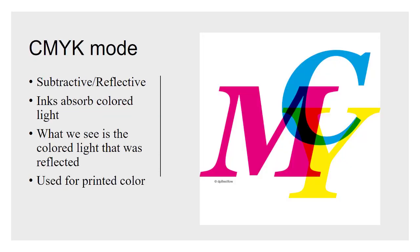CMYK stands for cyan, magenta, yellow, and K stands for black. That's a system used for print. It has to do with how light is reflected off of a substrate like paper. As it's reflected off, part of that gets absorbed by whatever pigments or inks are on that paper. As light is absorbed, some of it is subtracted out of the visible spectrum, and what's left that reflects off is what we see.